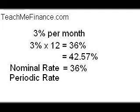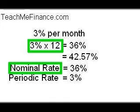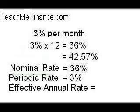In this case, it's each month. So the periodic rate is 3%. In order to determine the nominal rate, you multiply the periodic rate times the number of compounding periods. The periodic rate was 3% and there were 12 compounding periods for 12 months, so the nominal rate was 36%.